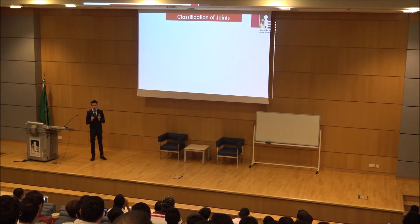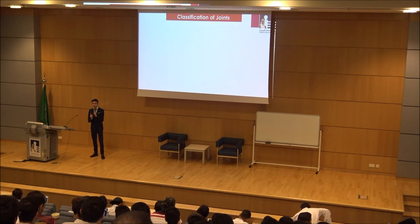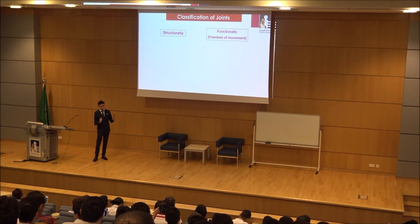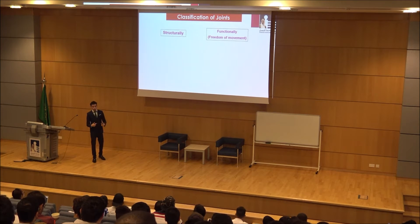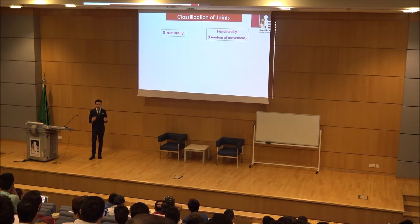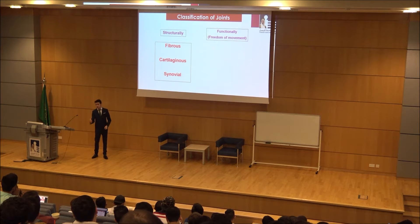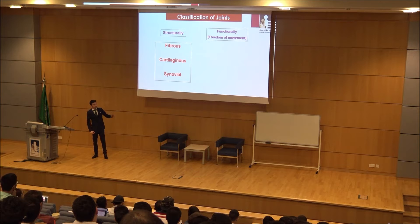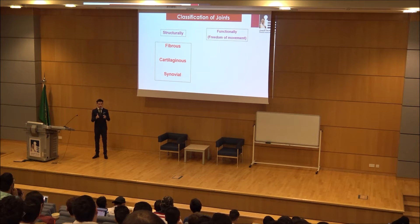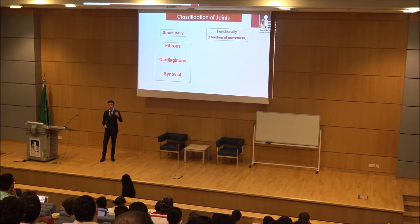Classification of joints: we have two classifications — structural and functional. When you mention functional, we mean according to the freedom of movement. Now the structural classification has three types. The first is called fibrous — joined by fibrous tissue. The second is cartilaginous — joined by cartilage. And the last is synovial — joined by synovial fluid.